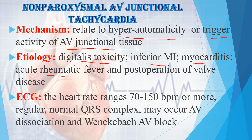On ECG, the heart rate ranges from 70 to 150 beats per minute. Our normal heart rate is between 60 to 100 beats per minute, but in Non-Paroxysmal AV Junctional Tachycardia it ranges from 70 to 150 beats per minute or more. The ECG rhythm is regular, normal QRS complex may occur, and there may be AV dissociation and Wenckebach AV block.